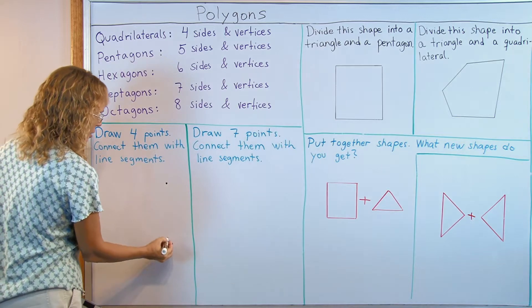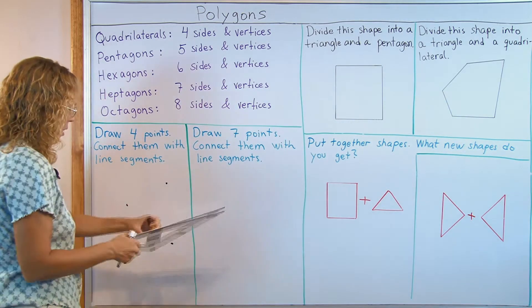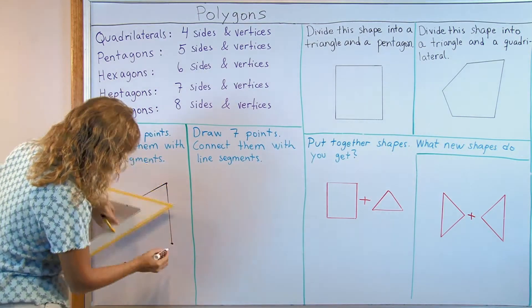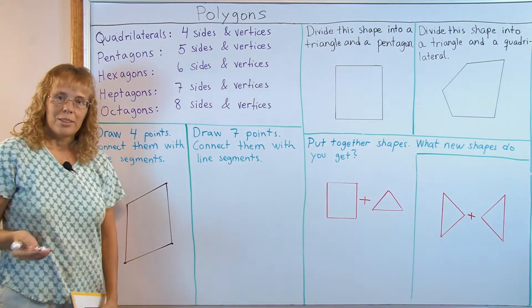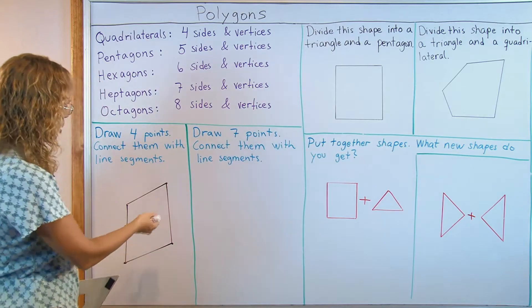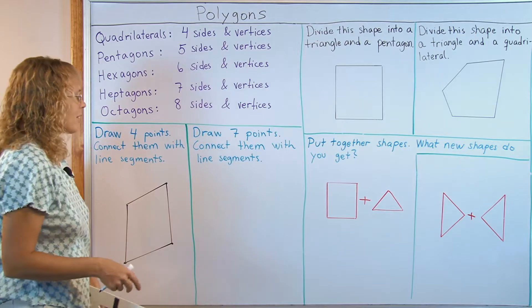If I draw four points just kind of randomly, wherever I please, then connect them. There. Now I got of course a quadrilateral and I didn't get any special one like a square or anything, just a quadrilateral.